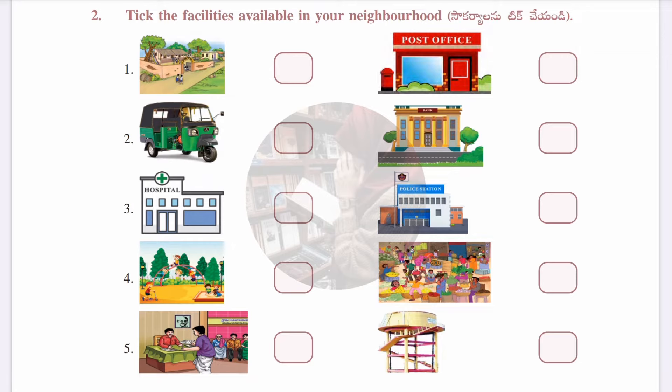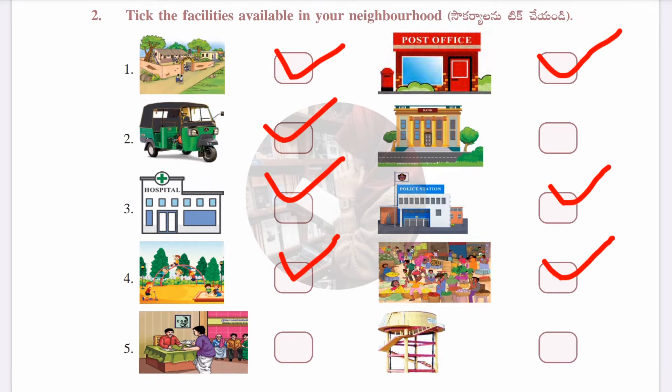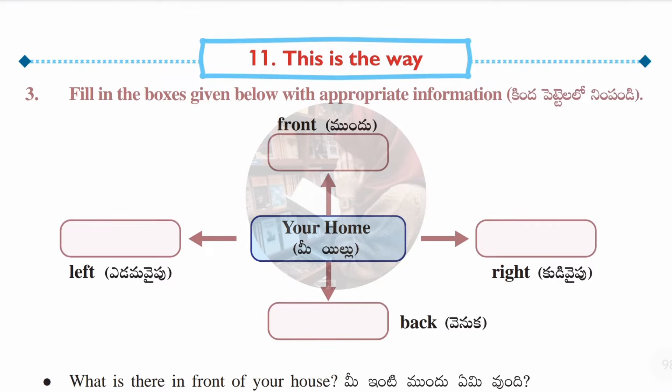The second section shows some pictures with tick boxes. You need to tick the facilities available in your neighborhood — just see the pictures and tick whichever facility is available, or leave it empty. For example, I put a tick mark for neighborhood since everyone has one.